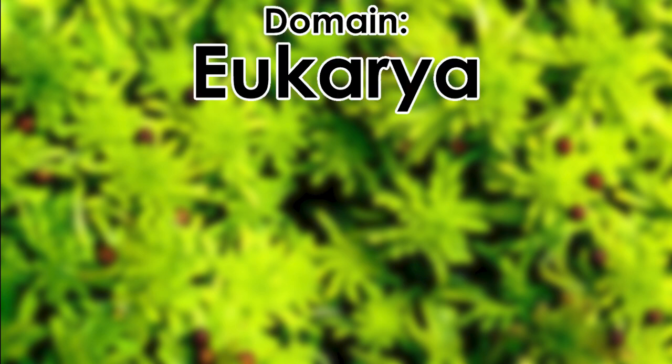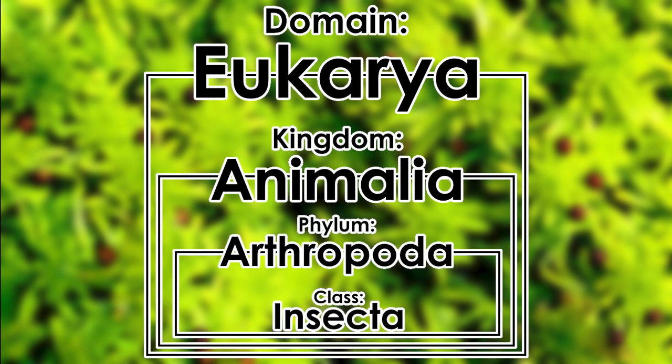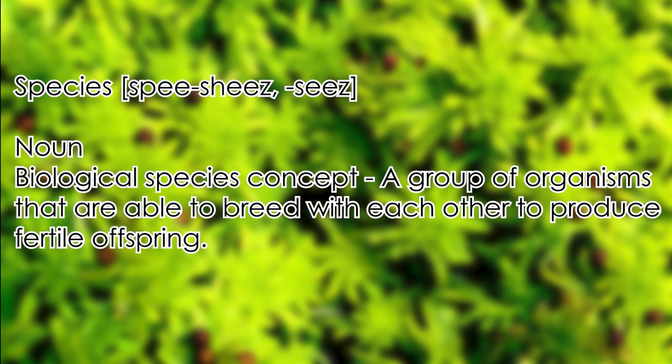The Eukaryota domain contains four kingdoms which are Protista, Plantae, Fungi, and Animalia. Insects are found within Animalia, specifically the phylum Arthropoda and the class Insecta. Within Insecta there are, as of writing this — and it's almost always changing — 29 orders which have many many families between them. Within families are genera, which are a collection of closely related species. While there are many definitions of species, the most common is the biological species concept, which states that a species is a group of organisms able to breed with each other to produce fertile offspring. The species level is generally the bottom-most rank of taxonomy with the highest amounts of specificity.